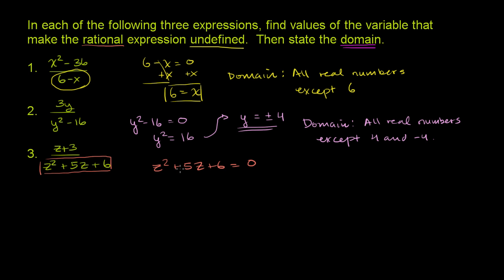And it looks like we can factor this. We can find two numbers whose product is 6 and whose sum is 5. Well, that's 2 and 3. So this is the same thing as z plus 2 times z plus 3. You can verify that for yourself, that it really does factor out like this.